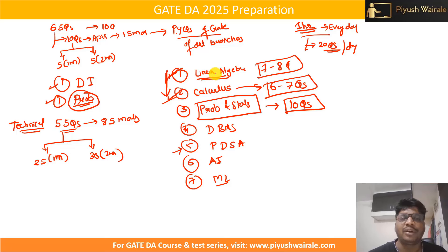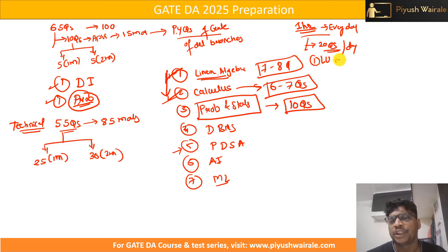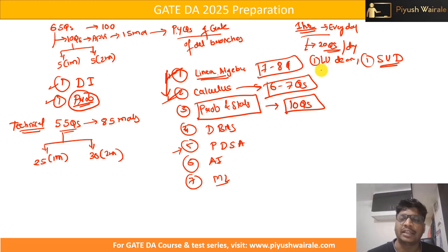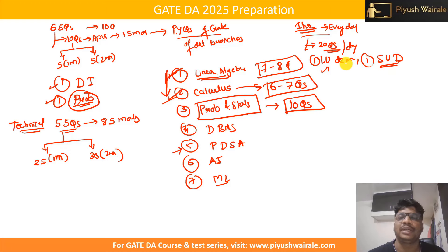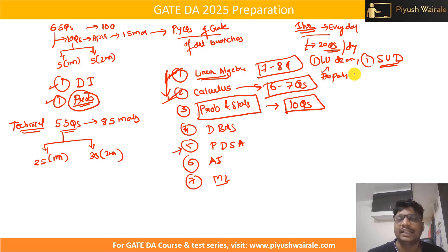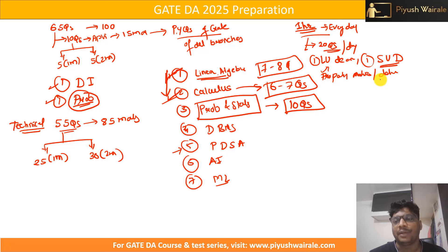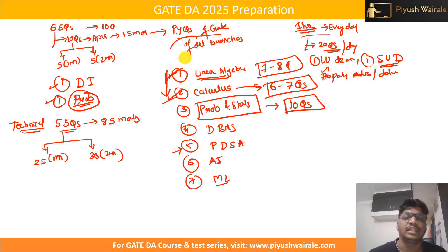For linear algebra, go through the entire syllabus. You can expect one question from LU decomposition and one from singular value decomposition (SVD), or possibly two questions from each. Very important — try to focus on decomposition and SVD. Also focus on properties of matrices, determinants, systems of linear equations, and eigenvalues and eigenvectors. These are the key topics from which GATE usually asks questions, and every year there is at least one question from eigenvalues and eigenvectors.